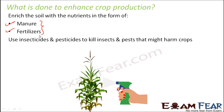Soil is rich in nutrients like potassium, sulfur, nitrogen, etc. Just to increase the content of all these nutrients in the soil, we additionally put these nutrients into the soil, either in the form of manure or fertilizer.